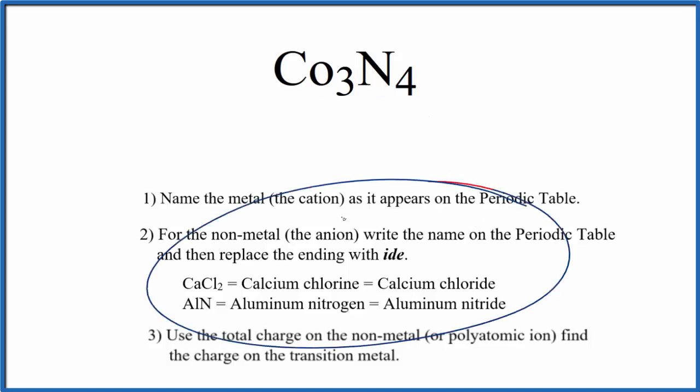We use these rules to write the name for Co3N4. First, we write the name for the metal as it appears on the periodic table. Co, that's just cobalt.